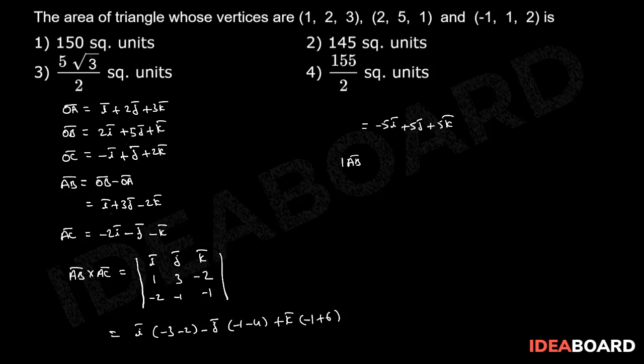Now, mod of AB bar cross AC bar equals to root of 25 plus 25 plus 25. That equals to 5 root 3. Therefore,